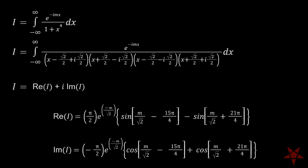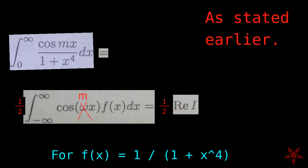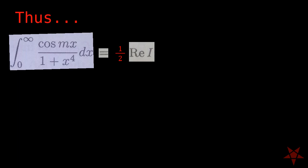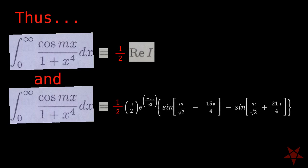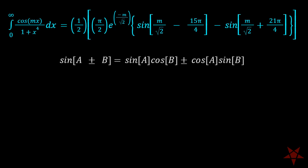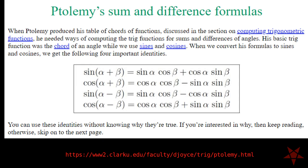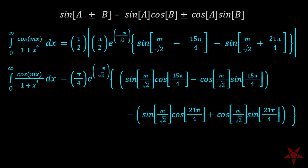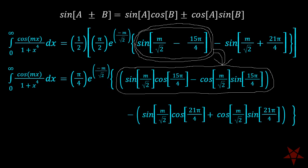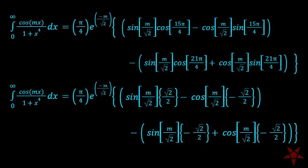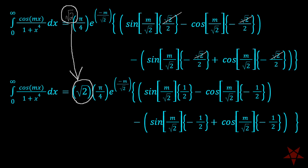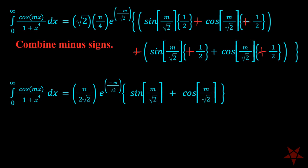With the value of the integral established, we can use it to find the value of the real improper integral cosine of mx over 1 plus x to the 4th from 0 to infinity. As stated in the setup portion of this video, the value of the real integral that we seek is equal to one-half that of the real component of the integral that we just calculated. The sum and difference formulas for the sine and cosine functions, referred to as Ptolemy's identities, come in handy here, as does knowledge of old-school trig, when evaluating sine and cosine functions at both 15 pi over 4 and 21 pi over 4 radians. Root 2 factors out, minus sines combined, and we have pi over 2 root 2 times e to the minus m over root 2 times a set of brackets containing sine m over root 2 plus cosine of m over root 2.